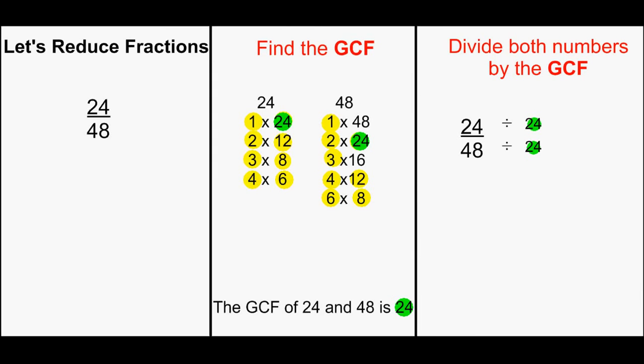Now, to reduce the fraction, divide both numbers by the GCF 24. 24 divided by 24 is 1. 48 divided by 24 is 2. Therefore, our fraction 24 48ths equals 1 half.